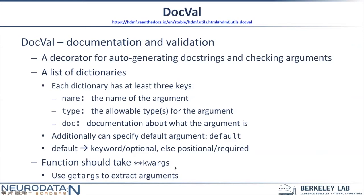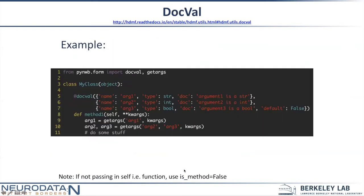On top of docval you can use this other function called get_args to extract arguments. Here's an example of how all this gets used. I have my class object and I've defined a method for that class.